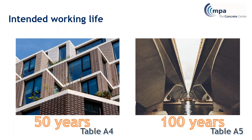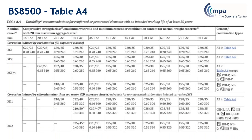Table A4 is for 50 years and Table A5 is for 100 years. These tables show that as you go up in exposure class - from XC1 to XC3/4 - you need more cover, which is the distance between the reinforcement and the face of the concrete, and you also need a stronger concrete. XD and XS classes tend to require stronger concrete for greater durability and more cover.